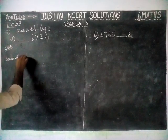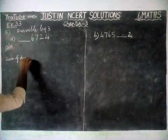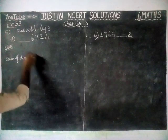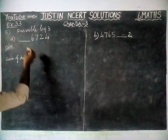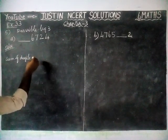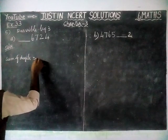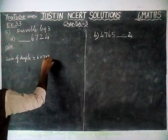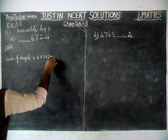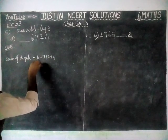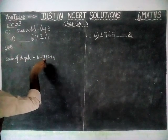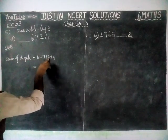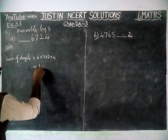Sum of digits is equal to — this number we don't know, so we will take it as it is — 6 plus 7 plus 1 plus 2 plus 4. That gives us: 6 plus 7 is 13, plus 2 is 15, plus 4 is 19.